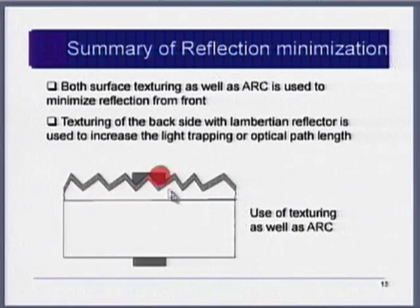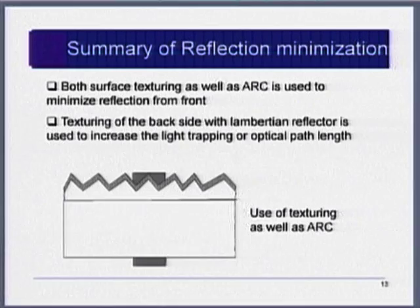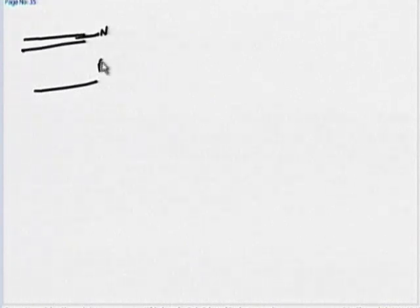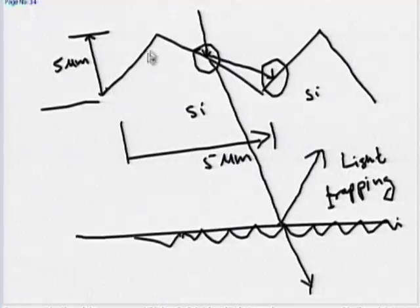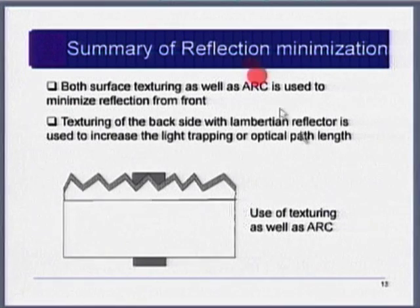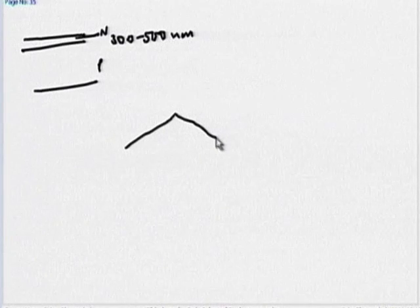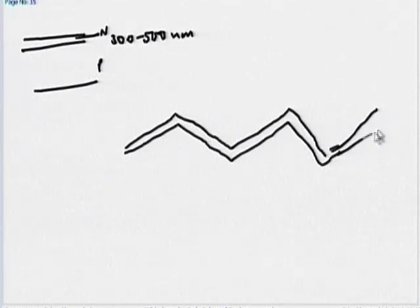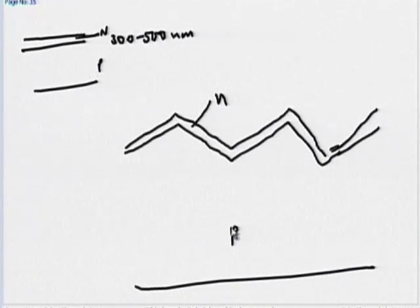To minimize reflection, two techniques are used: anti-reflective coating and texturing. Now, the emitter — the N layer — has a thickness of only 300 to 500 nm. But the pyramids formed by texturing are about 5 micrometers — roughly 1000 times the emitter thickness. This means the emitter is not flat; the junction itself is not flat. The N region follows the textured surface, sitting on top of the P region.